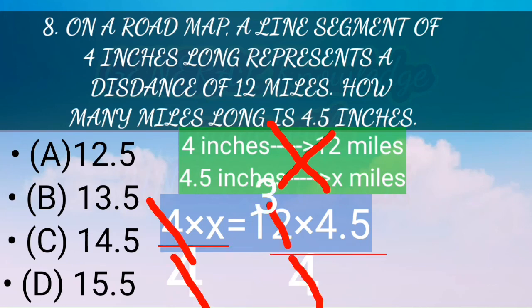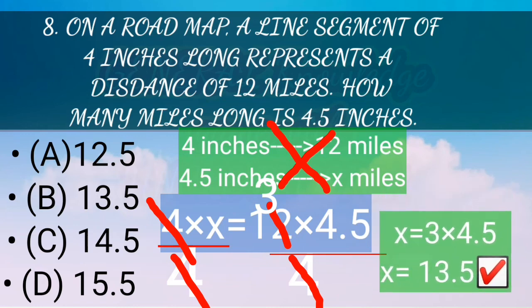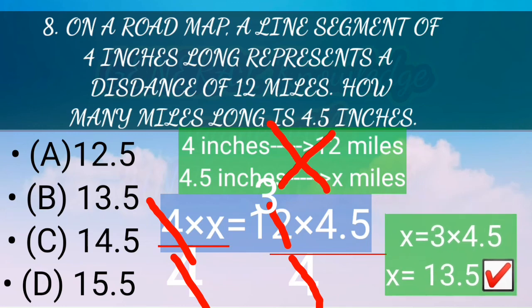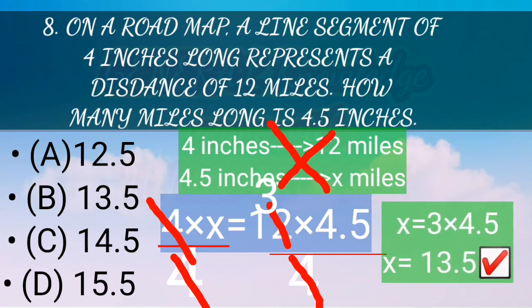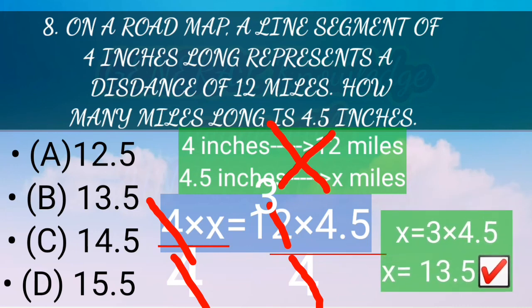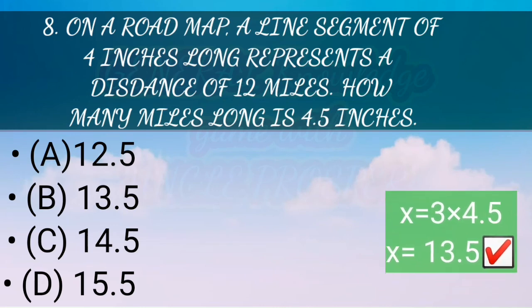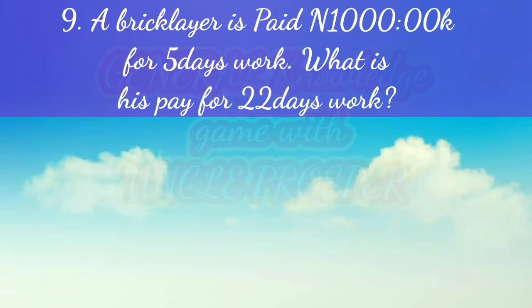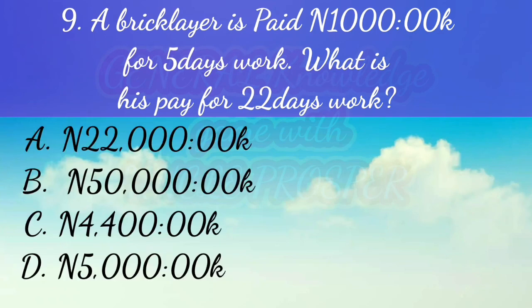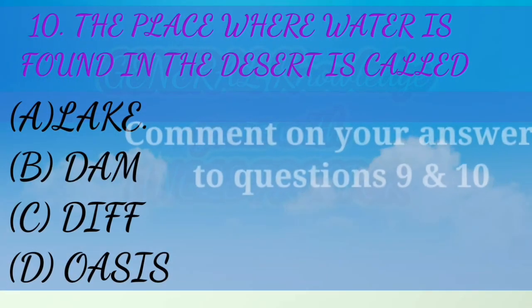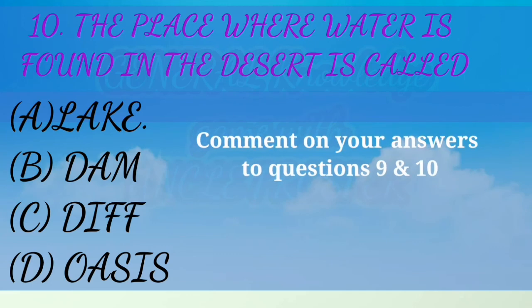When you multiply that, you get 13.5, so the answer is (b) 13.5 miles. If you got that right, you are a hero! This is a very simple question. General paper is meant to be simple — in fact this is a primary school question — but no matter how simple, if you are preparing for Post UTME, you have to know it. Answer the similar question in the comment box and I will reply. Thanks for watching, and don't forget to subscribe.